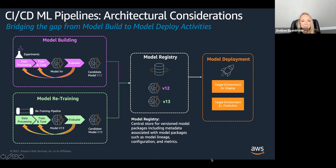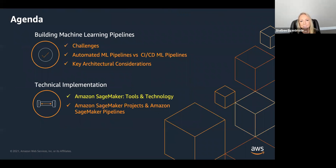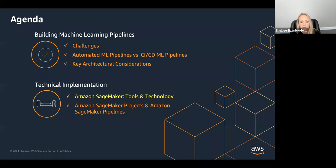That was some of the high-level considerations and a conceptual view of bridging the gap between the model build and model deploy activities for that entire end-to-end workflow. Now we're going to talk a little bit more about tech in particular. First we'll talk about SageMaker, and then we'll talk about some of the tools and technology that we see with native integrations. Then we'll dive more into SageMaker's native solution, which is Projects and Pipelines.